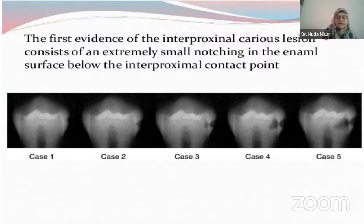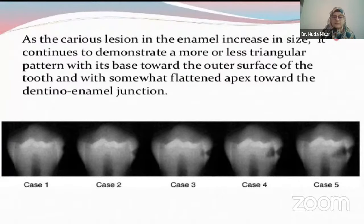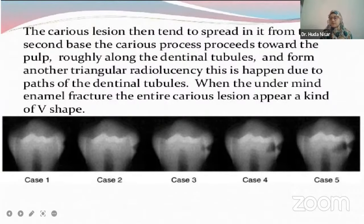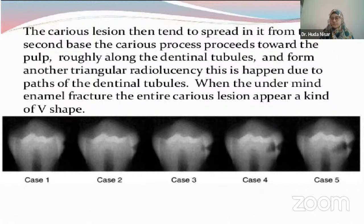As caries progress, you can see in the picture there is a triangular lesion. This triangular lesion has a base towards the outer surface and the apex towards the dentino-enamel junction. These caries depict moderate caries where the lesion is into the enamel completely but has not breached the dentino-enamel junction. In case three, the dentino-enamel junction is intact but the dentine shows radiolucency — meaning the caries has progressed into the dentine, but the pattern still remains triangular with the base towards the DEJ and the apex towards the pulp chamber.